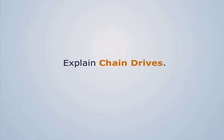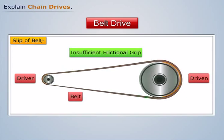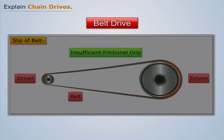Explain chain drives. In belt drives, we have observed slipping problems between the belt and pulleys.